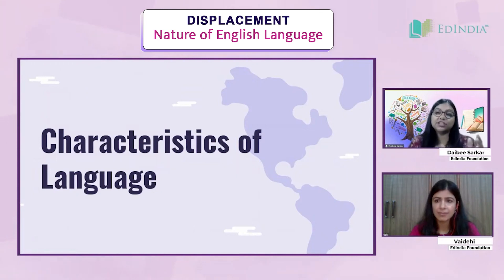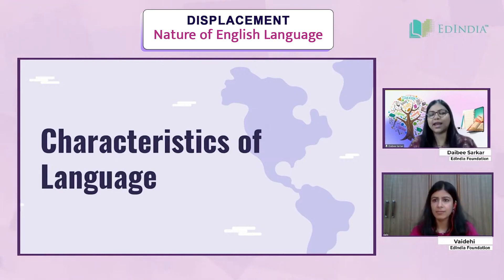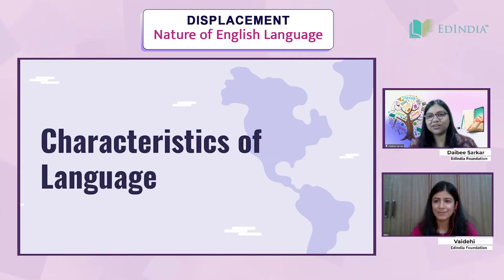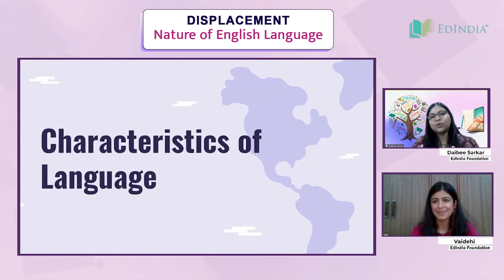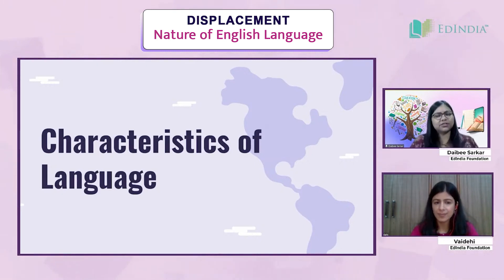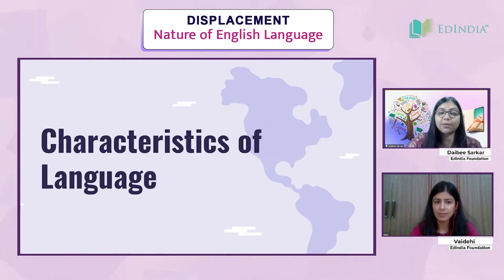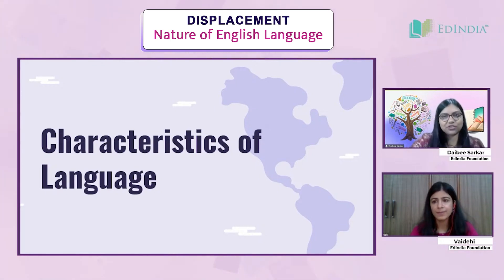What are the characteristics of the language that make it unique? Animals also have sounds and they also communicate. For example, pets at home communicate when they are hungry. Every animal communicates in this way, even insects. But human language is unique in certain ways. We will try to understand this through its characteristics.